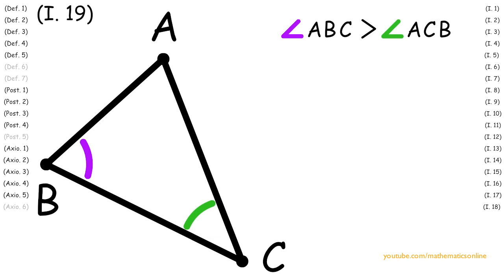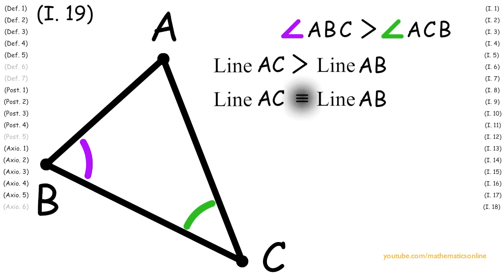Now, what we want to prove in the end is that line AC is greater than line AB. But we must also consider the other two possibilities. Line AC can be congruent to line AB, or line AC can be less than line AB.